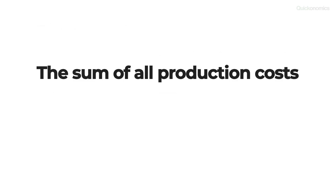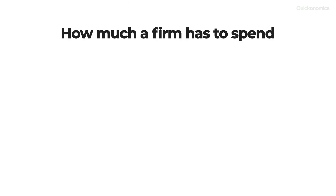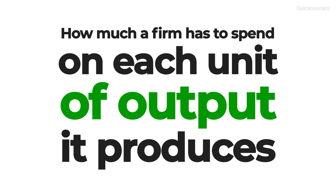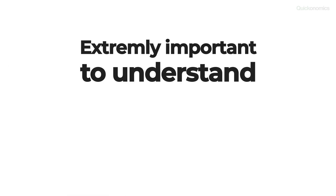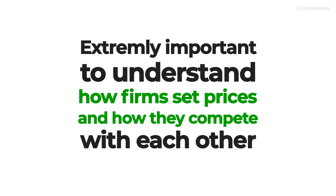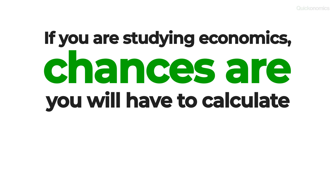Average total cost is defined as the sum of all production costs divided by the quantity of output produced. That means it measures how much a firm has to spend on each unit of output it produces. The concept of average cost is extremely important to understand how firms set prices and how they compete with each other. If you're studying economics, chances are you'll have to calculate average total cost sooner than later.